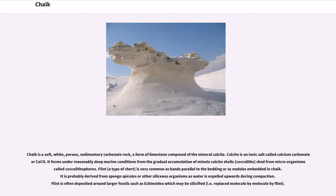Flint is very common as bands parallel to the bedding or as nodules embedded in chalk. It is probably derived from sponge spicules or other siliceous organisms as water is expelled upwards during compaction. Flint is often deposited around larger fossils such as Echinoidia, which may be silicified.